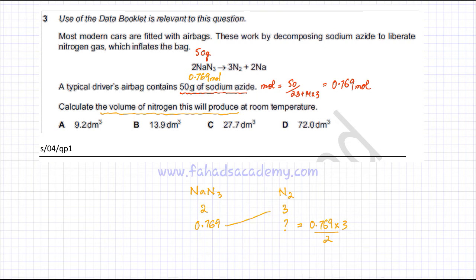Cross-multiplying, I get this value. And using my calculator to solve this, it's going to be multiplied by 3. And then, I'm going to divide by 2. And that gives me approximately 1.15 moles rounded to 3 significant figures. That's the amount of nitrogen gas that would be produced.